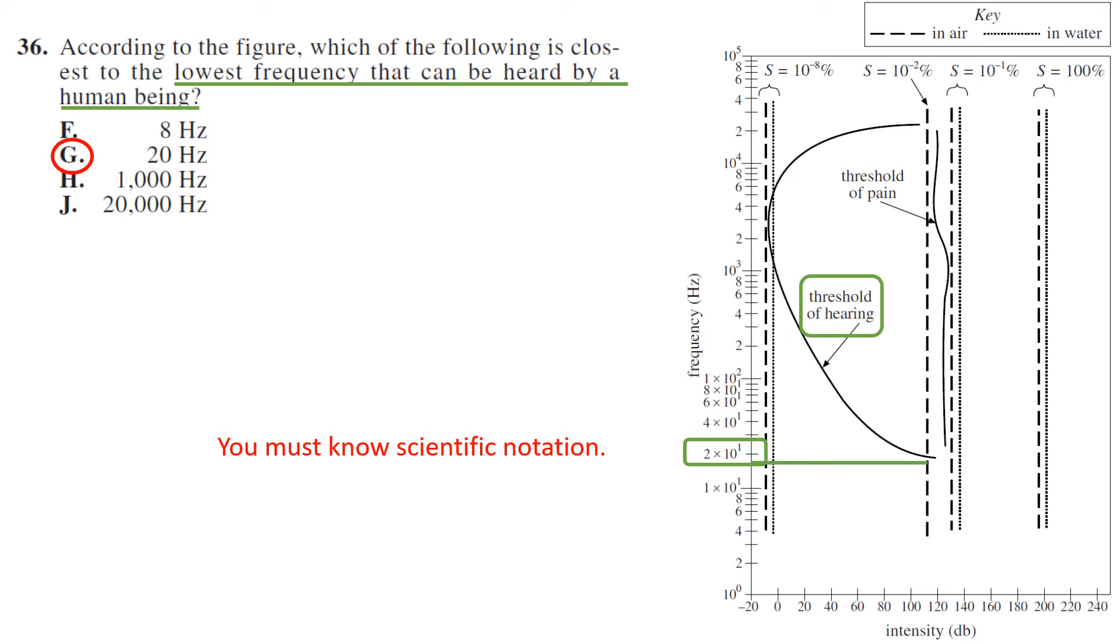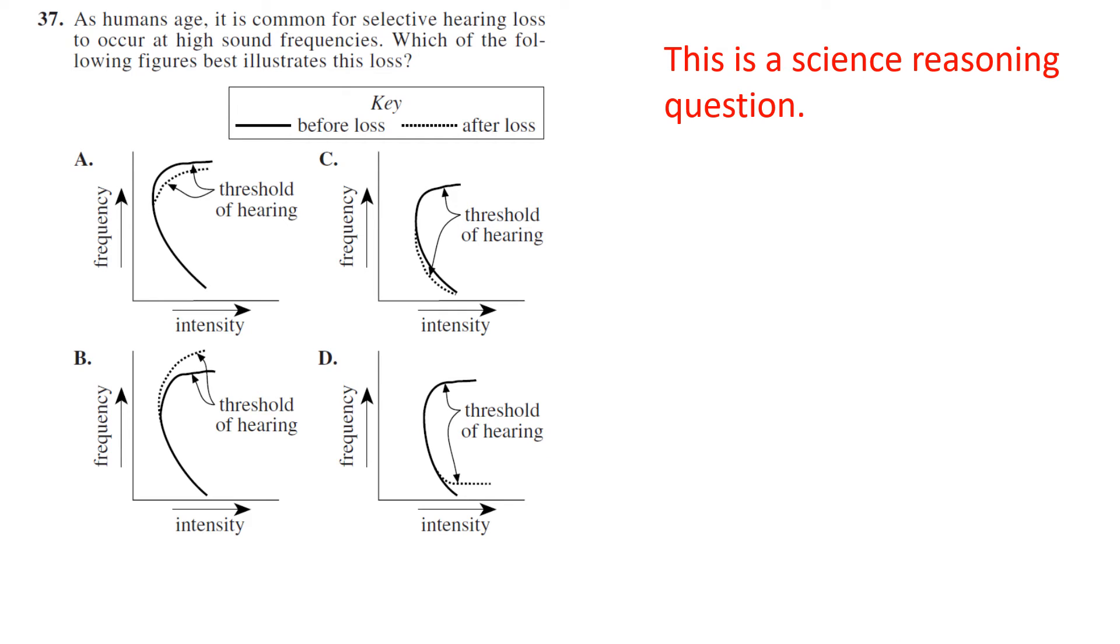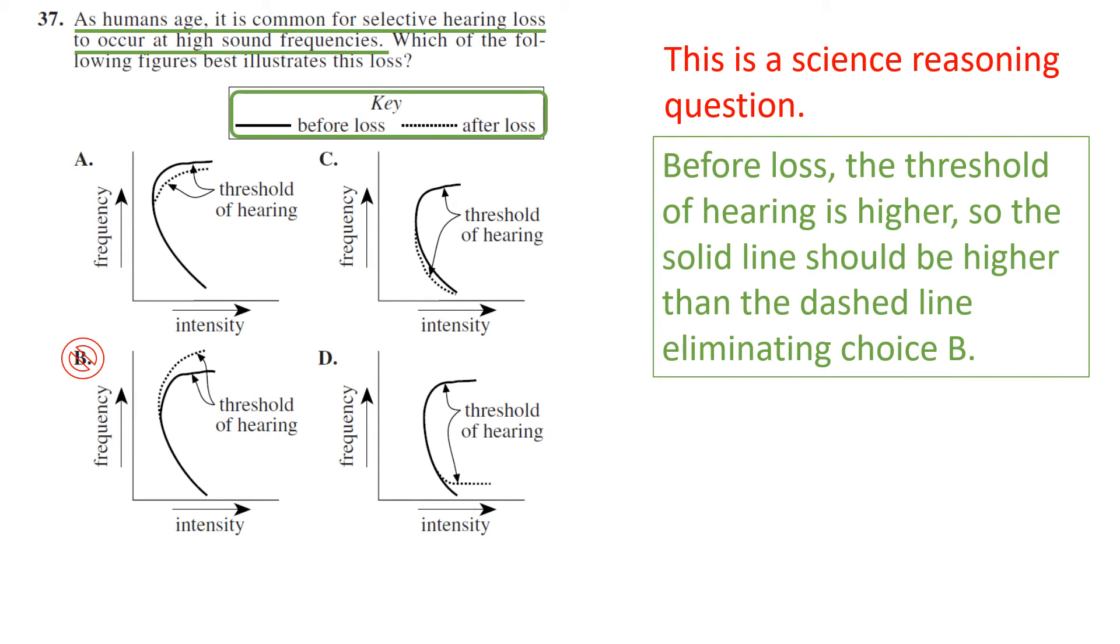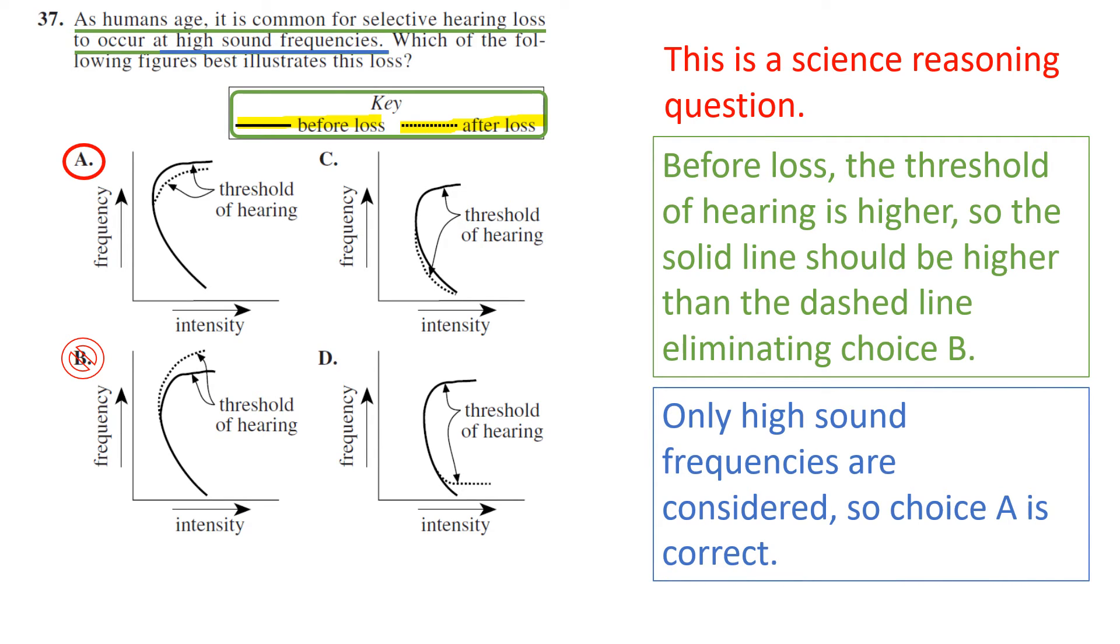As humans age, it is common for selective hearing loss to occur at high sound frequencies. Which of the following best illustrates this loss? Before loss, the threshold is higher, so the solid line should be higher because that's before loss. After loss, the threshold is lower, so the dashed line should be lower. We're going to eliminate anything with the dashed line that is higher, so it eliminates choice B. Then we are only considering high frequencies, so that eliminates the others. Choice A is your correct choice.